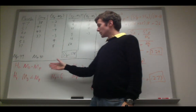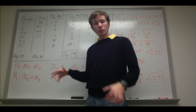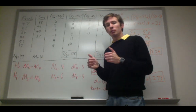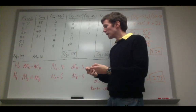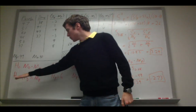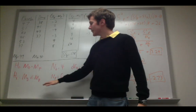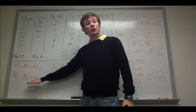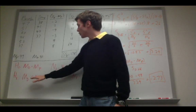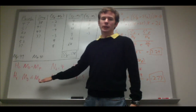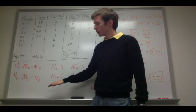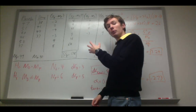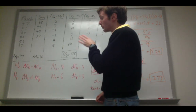The null hypothesis states that the means between the two groups should be equivalent — there should be no effect based on introducing a drug. The alternative hypothesis, or H1, is that the symptoms of anxiety for the people taking the drug on average should be lower than the people who are taking the placebo. So M subscript d is going to be less than M subscript p.